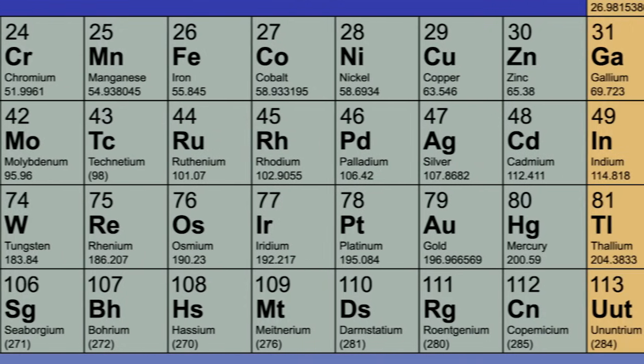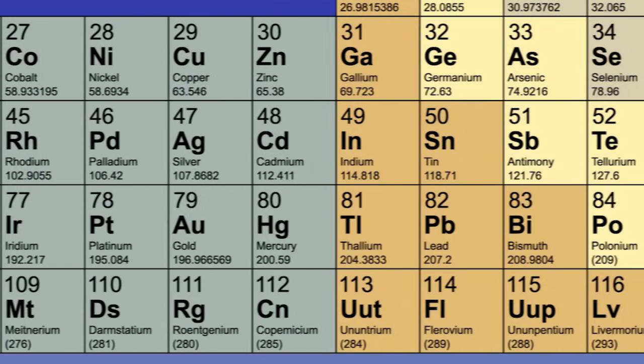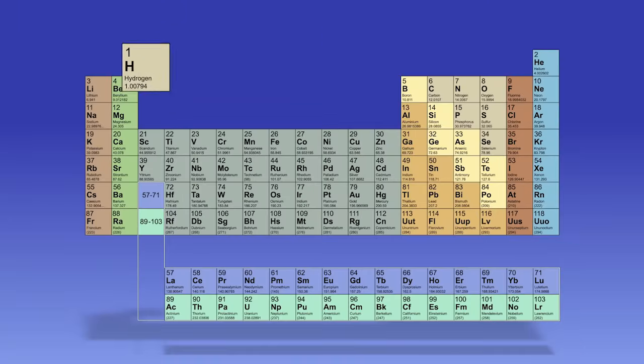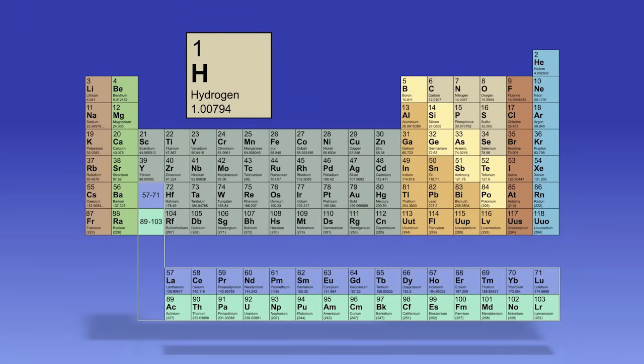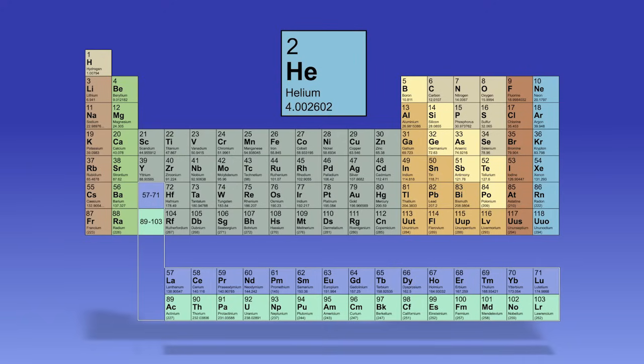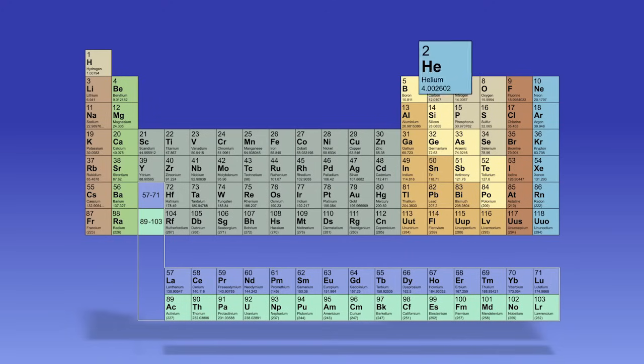Each element is made up of the same kind of atom with a specific number of protons in its nucleus, the atomic number. For example, H represents hydrogen. All hydrogen atoms have one proton. The symbol HE represents helium. All helium atoms have two protons.